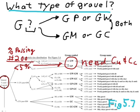And then, in this case, we need to do a grain size distribution and determine both the coefficient of uniformity and the coefficient of concavity, CU and CC.